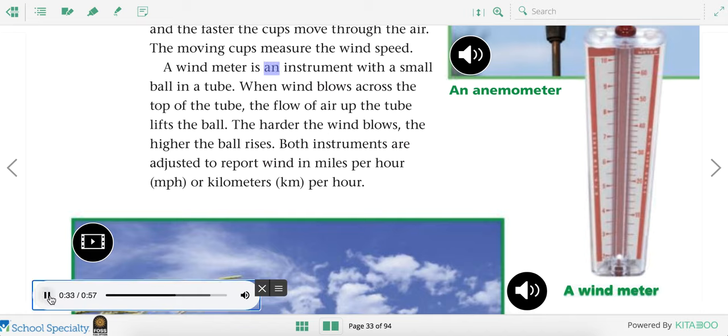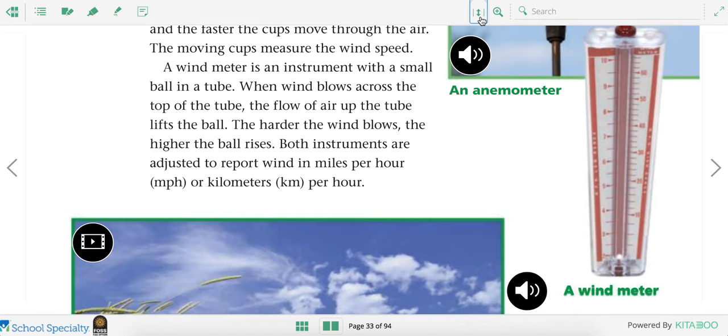A wind meter is an instrument with a small ball in a tube. When wind blows across the top of the tube, the flow of air up the tube lifts the ball. The harder the wind blows, the higher the ball rises. Both instruments are adjusted to report wind in miles per hour (mph) or kilometers (km) per hour. A meteorologist can also use a wind meter to measure the wind.